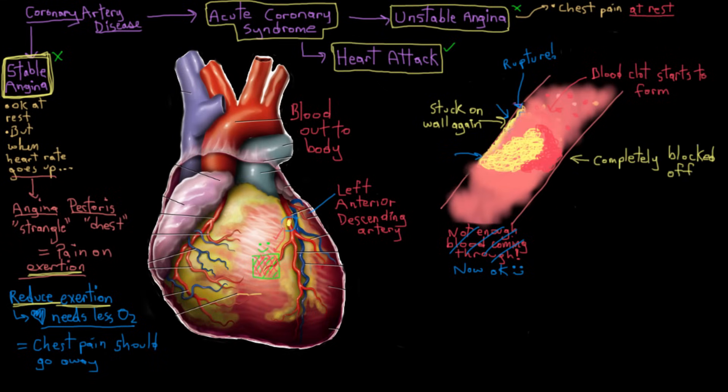And that's because it's just flapping around there. It can happen at any point. So that's why we call it unstable angina, because it's not predictable, and it can really just happen any time.